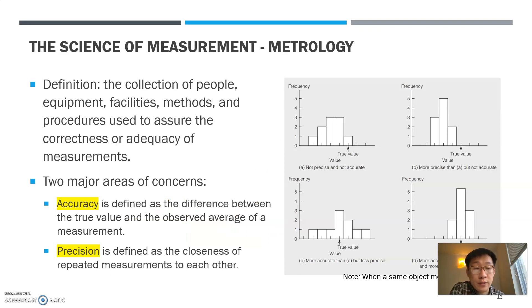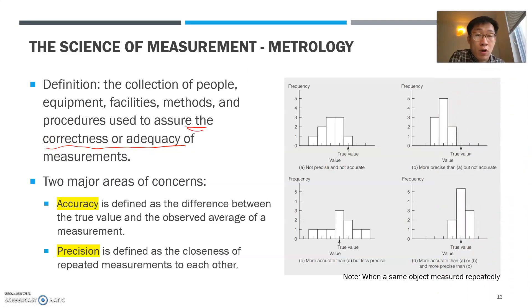For that reason, we study a little bit of metrology. Metrology is a science of collection of people, equipment, facilities, methods, and procedures used to ensure the correctness or accuracy of measurements. Whenever we talk about measurement, we focus on two areas. We'd like to have a measurement tool that is accurate and that is very precise. They may sound similar, but this captures very different ideas.